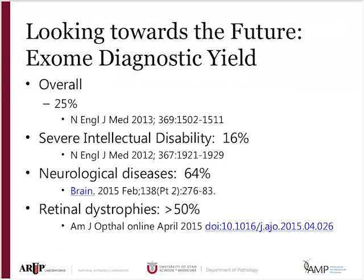Looking towards the future with exome sequencing, one measure is diagnostic yield — overall it's at 25%, which isn't bad considering nobody knows what is going on with these individuals. If you're only looking at severe intellectual disability, it drops to 16%. However, if there are other neurological symptoms involved as well, we're getting 64%, which is quite remarkable.